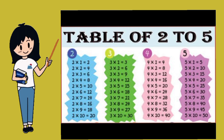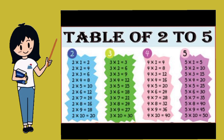Table of four. Four ones are four. Four twos are eight. Four threes are twelve. Four fours are sixteen. Four fives are twenty.